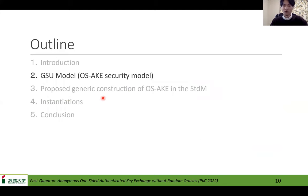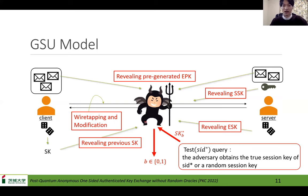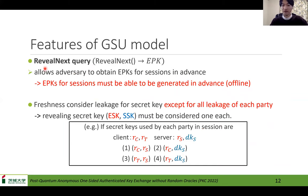Next, I'll explain the GCM model. The GCM model allows the adversary to wiretap, modify, and reveal previous session keys, reveal ephemeral secret keys, and reveal static secret keys, just like the Bellare-Rogaway model. Also as an additional query, it allows the adversary to obtain the ephemeral keys used in each party in advance. So in the GCM model, there is a query called RevealNext. It allows the adversary to obtain ephemeral keys for a session in advance. Ephemeral keys for sessions must be able to be generated in advance. Due to the advance generation, the freshness is a bit unique. It considers leakage of secret keys, and ESK and SSK must be considered one each.